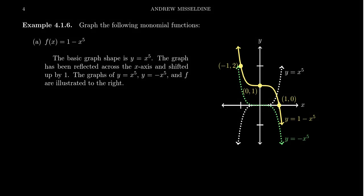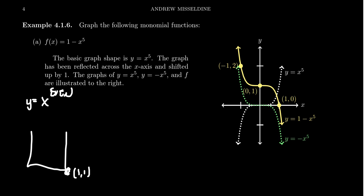We saw the very basic pattern that if you have y equals x raised to an even power, your graph is always going to have the following bucket-like shape, where you think of these as the points 1,1 and negative 1,1, and then 0 at the origin. It gets really shallow near the origin and steep otherwise the bigger you make the power.